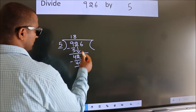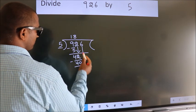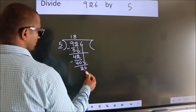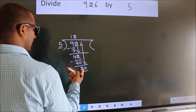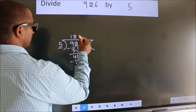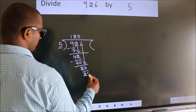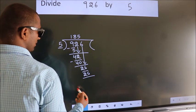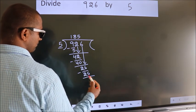After this, bring down the beside number. So, 6 down. So, 26. A number close to 26 in 5 table is 5, 5, 25. Now, we subtract. We get 1.